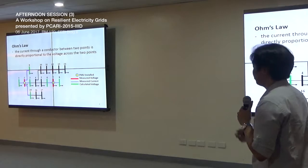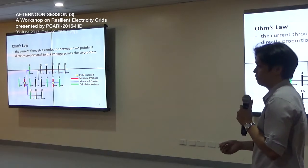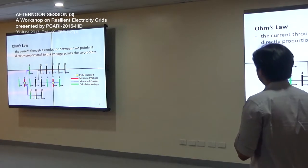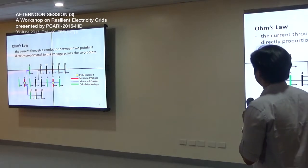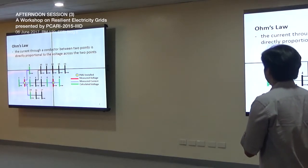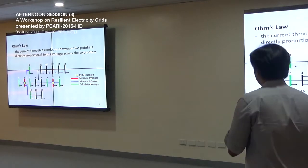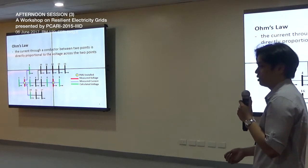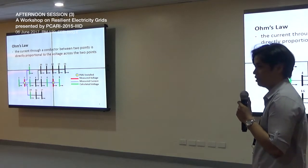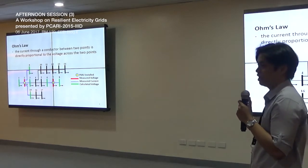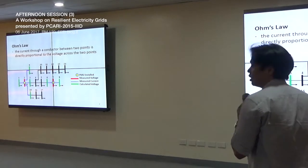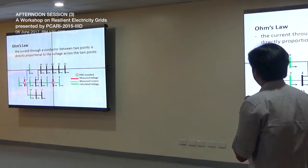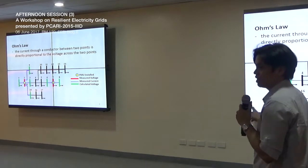From the previous slide, we can measure directly some values like the bus voltage and the currents of incident lines. With Ohm's law — which states that the current through a conductor between two points is directly proportional to the voltage across those two points — we can state the relationship between voltage and current. Given that the impedance of the network is known, we can extend our observability from, say, bus 2 to its adjacent buses.